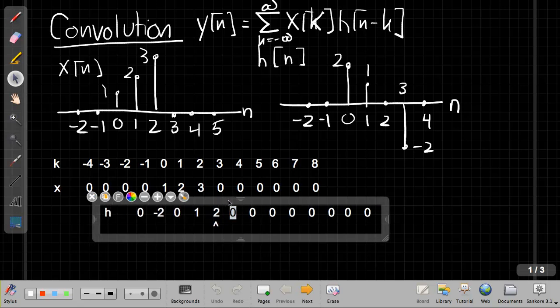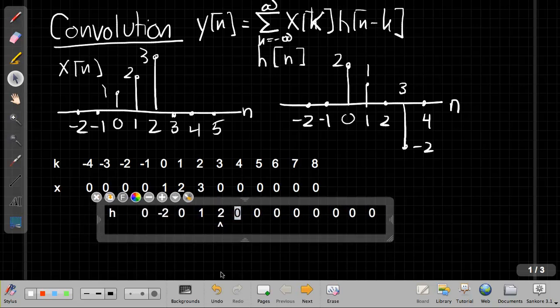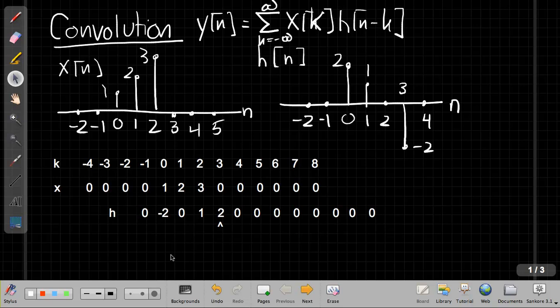So if we slide over by one more, we get the arrow is now lined up under the 3. So we're computing y of 3. I have minus 2 plus 0 plus 3 and then 0 is from 0 times 0 all the rest of the way out. So y of 3 will be minus 2 plus 3 which is 1.